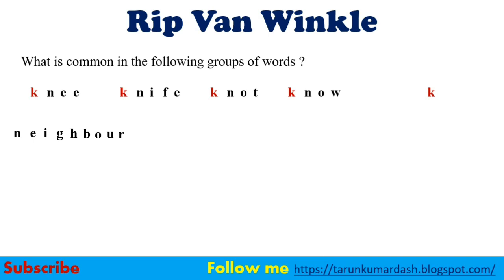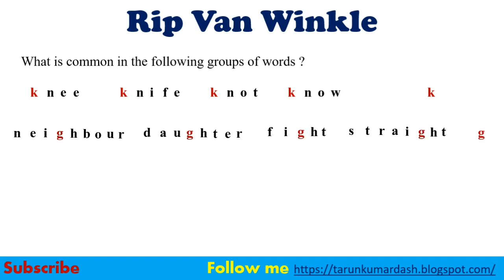Next: neighbor, daughter, fight, straight. Whenever we are pronouncing neighbor — N-E-I-G — G's sound is G but we are not pronouncing it. Similarly in daughter, G is not pronounced. In fight, we are not pronouncing G. And in straight also G has no sound. So the common silent letter here is G. Then: honest, honor, heir, hour — here H also remains silent.